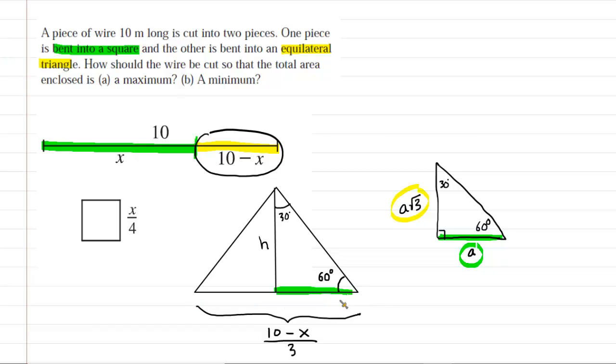Well, we know that the entire base of the equilateral triangle is 10 minus x over 3. So this little green side would just be half of that. This would be 10 minus x over 3 times 1 half.